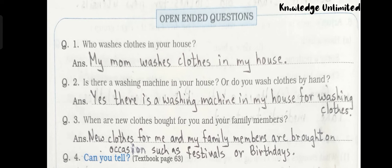Now we have open-ended questions. Question number one: who washes clothes in your house? Answer: my mom washes clothes in my house. Question number two: is there a washing machine in your house or do you wash clothes by hand? Answer: yes, there is a washing machine in my house for washing clothes. Question number three: when are new clothes bought for you and your family members? Answer: new clothes for me and my family members are bought on occasions such as festivals or birthdays.